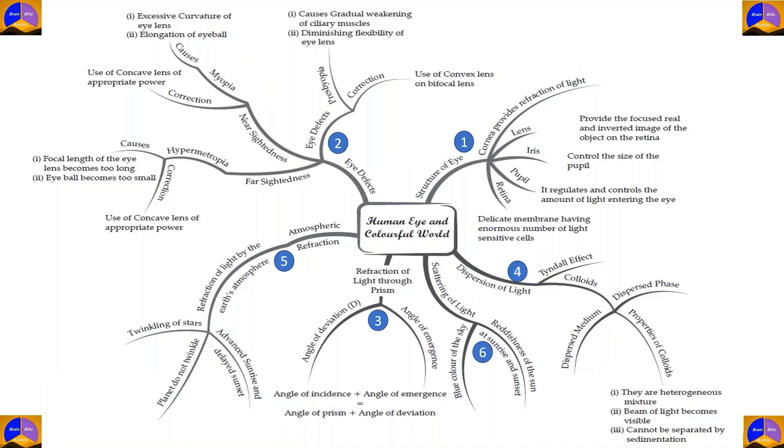In order to fast track the learning of this chapter, we've decided to use a mind map. Mind maps are great for revisions during last minute preparation. Now there are six portions in this mind map. They are structure of eye, eye defects, refraction of light through prism, dispersion of light, atmospheric refraction, and scattering of light. Now all of these are important topics of the chapter, Human Eye and Colorful World. And we will proceed using the number sequence given.